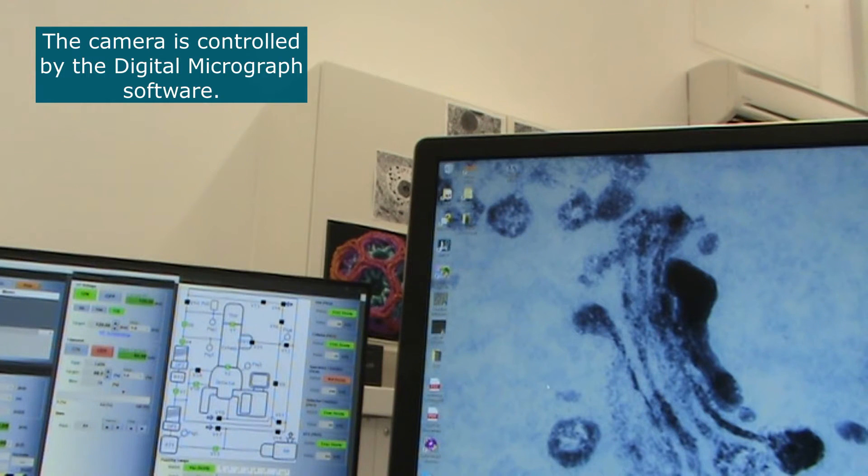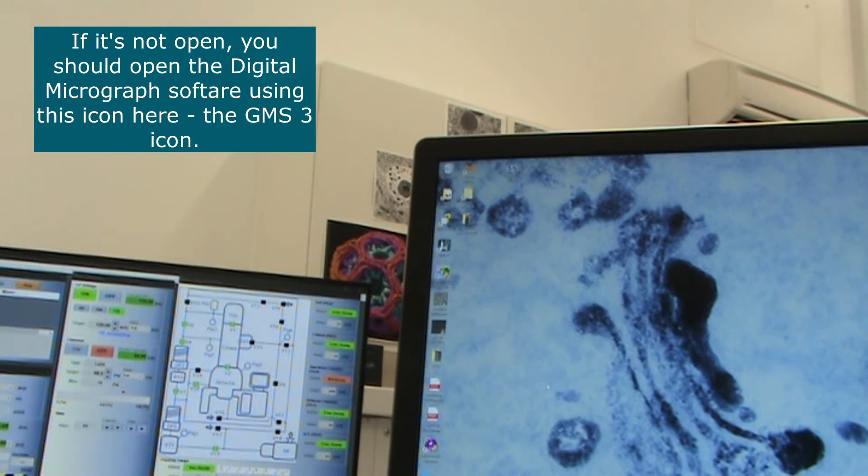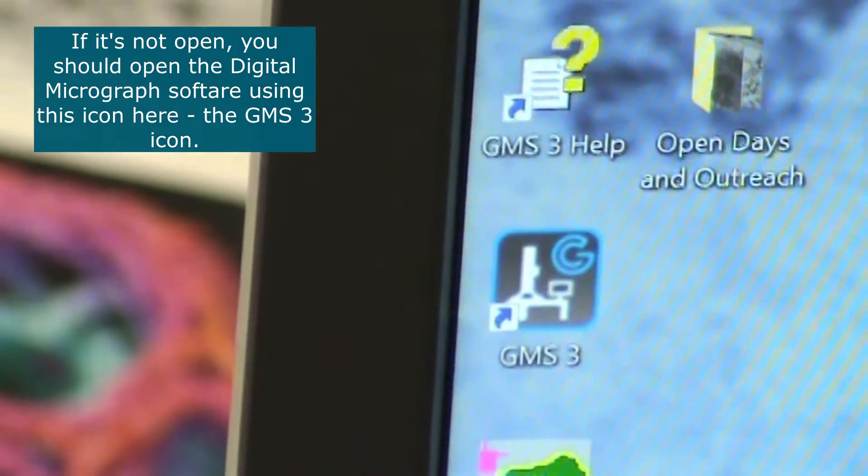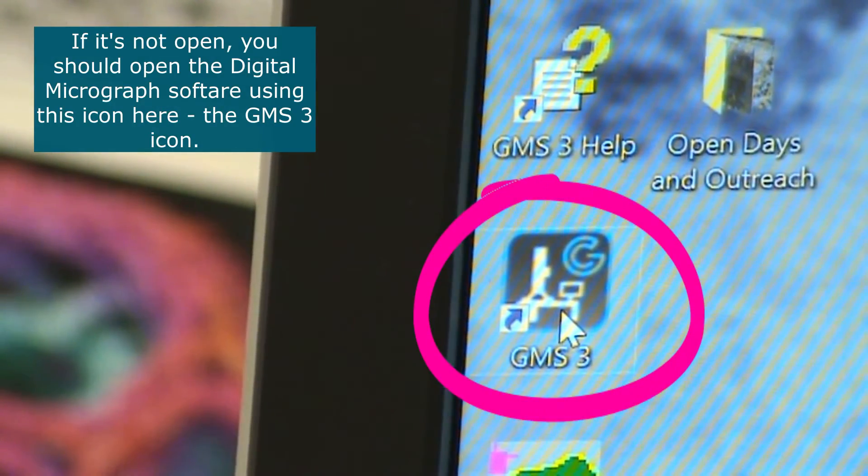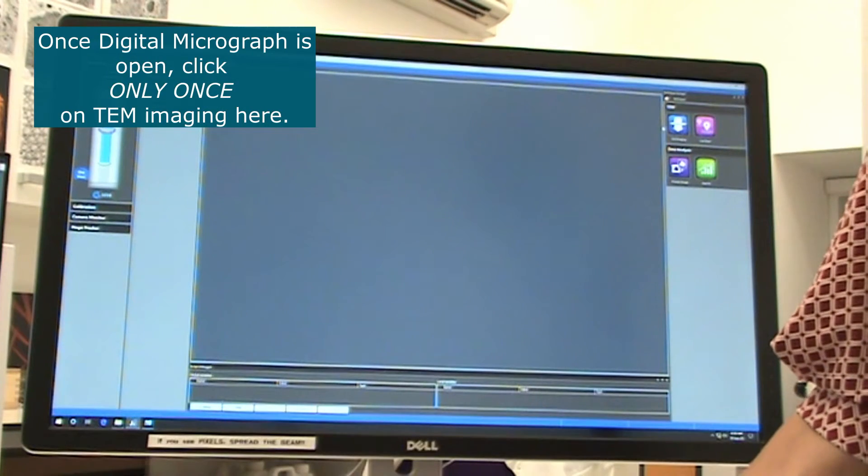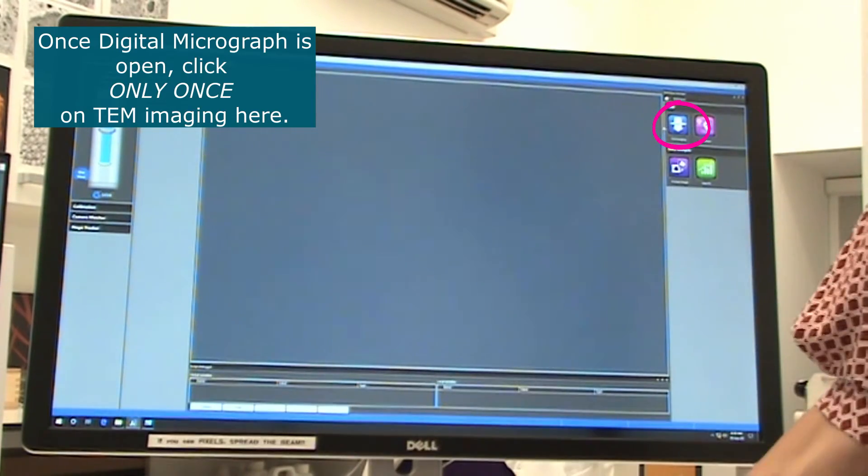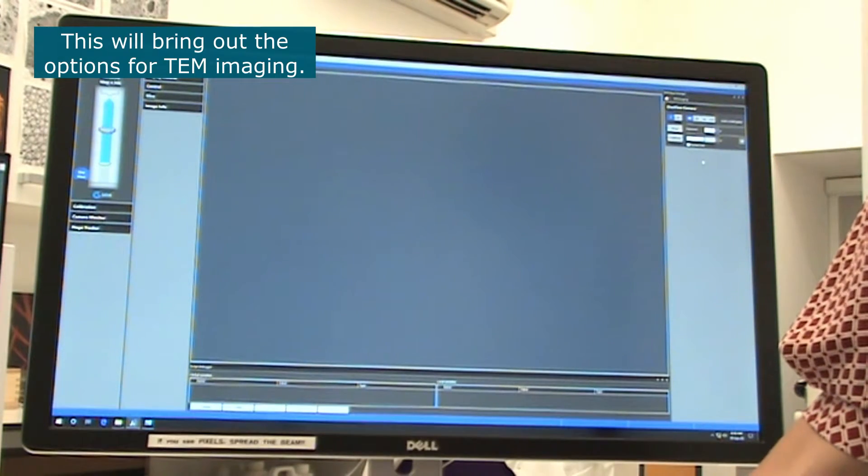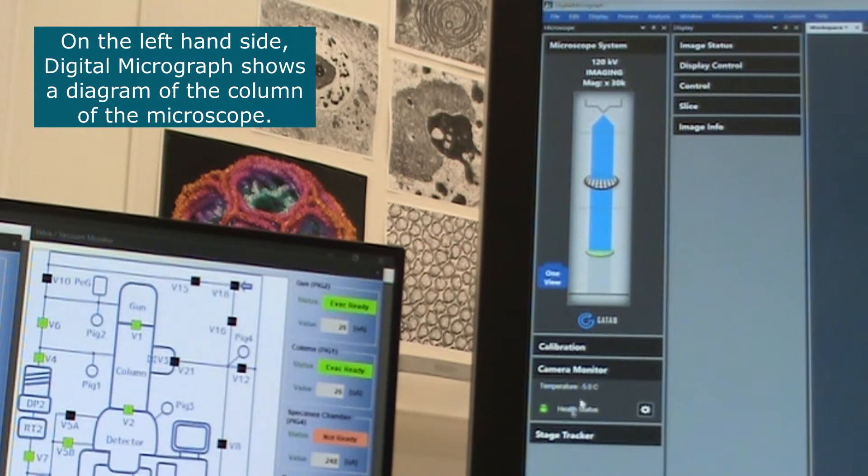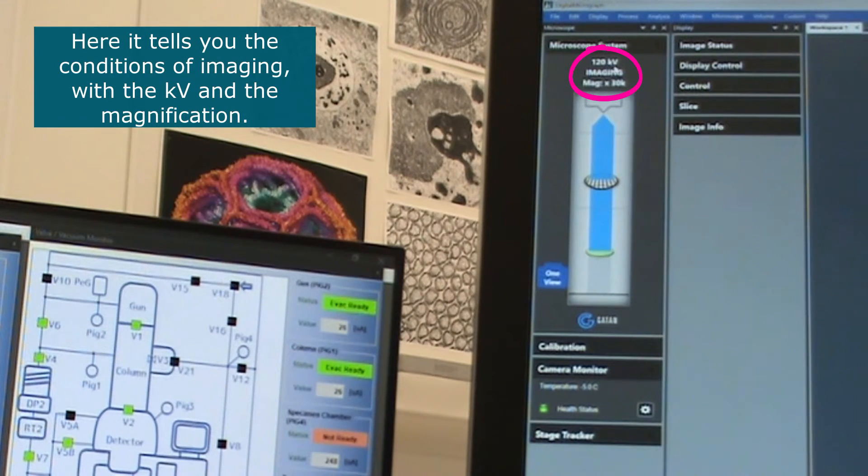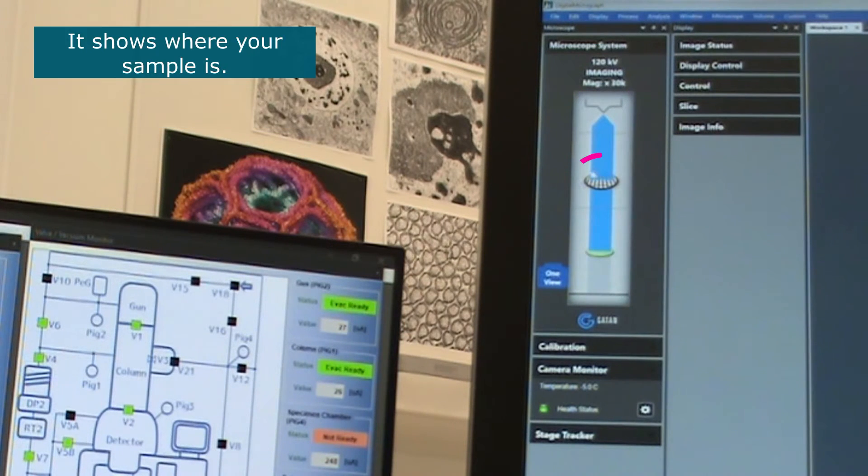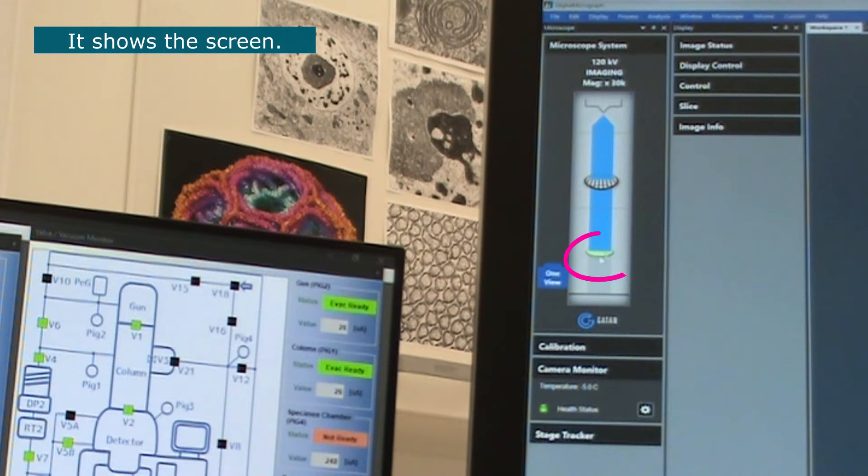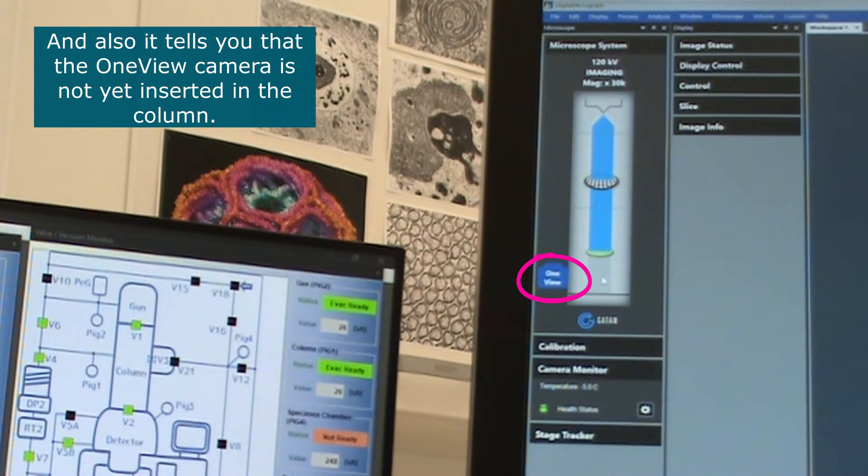The camera is controlled by the Digital Micrograph software. If it's not open you should open the Digital Micrograph software using this icon here, GMS3. Once Digital Micrograph is open click on TEM imaging here. This will give you the options for TEM imaging. On the left hand side here Digital Micrograph shows you a little diagram of the column of the microscope. So here it tells you the conditions of imaging with the KV and the magnification and it shows where your sample is. It shows the screen and also it tells you that the OneView camera is not yet inserted in the column.